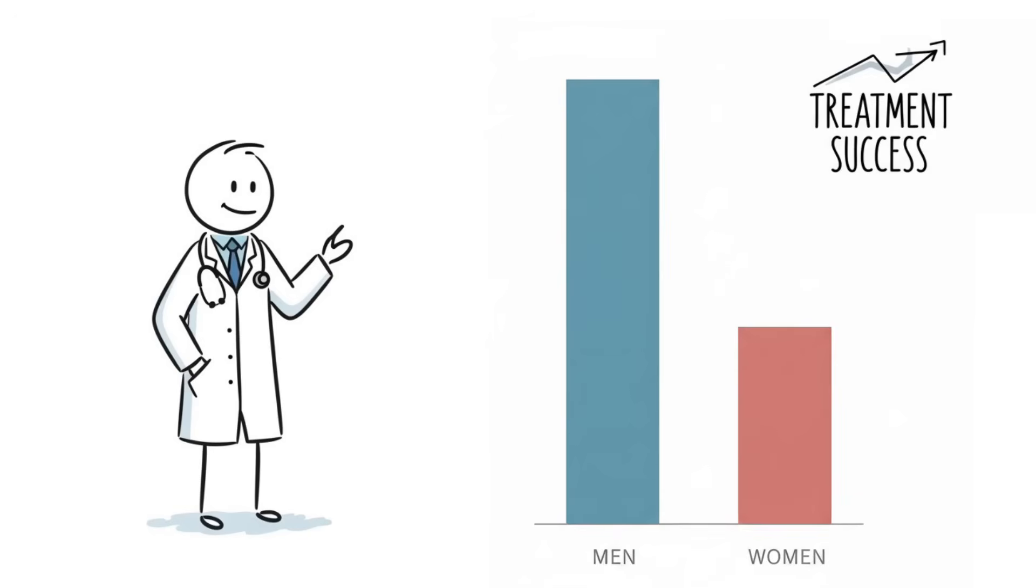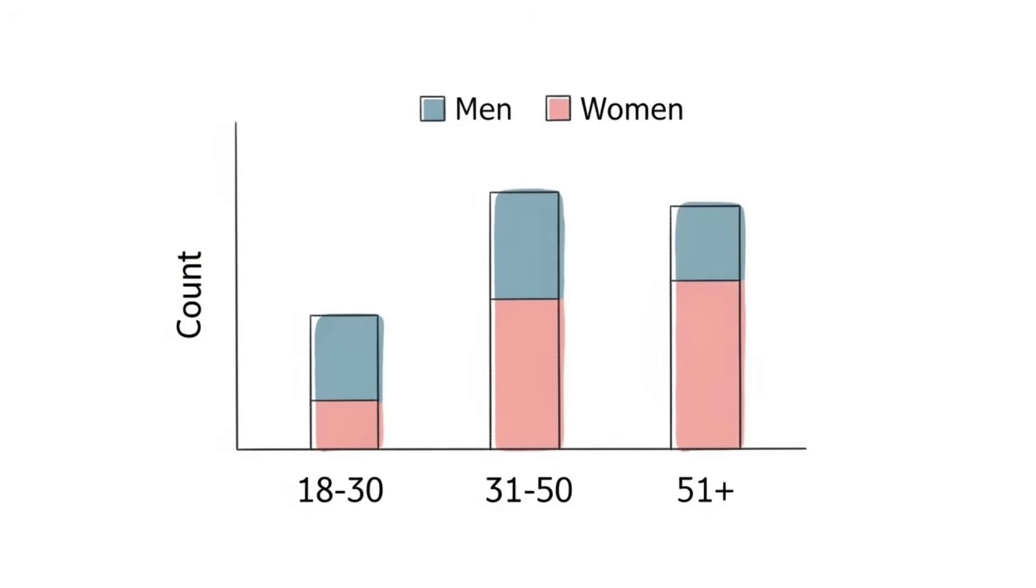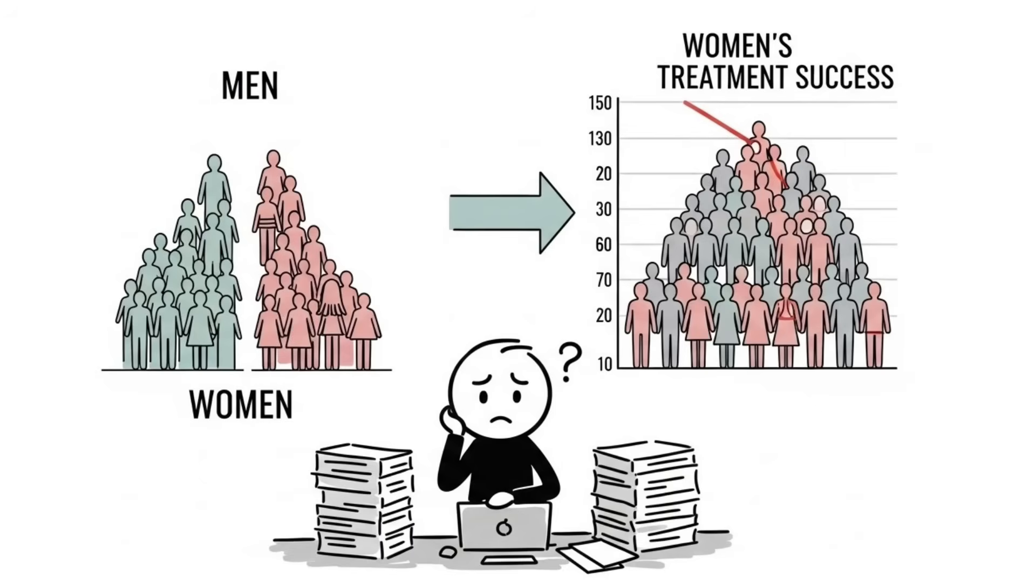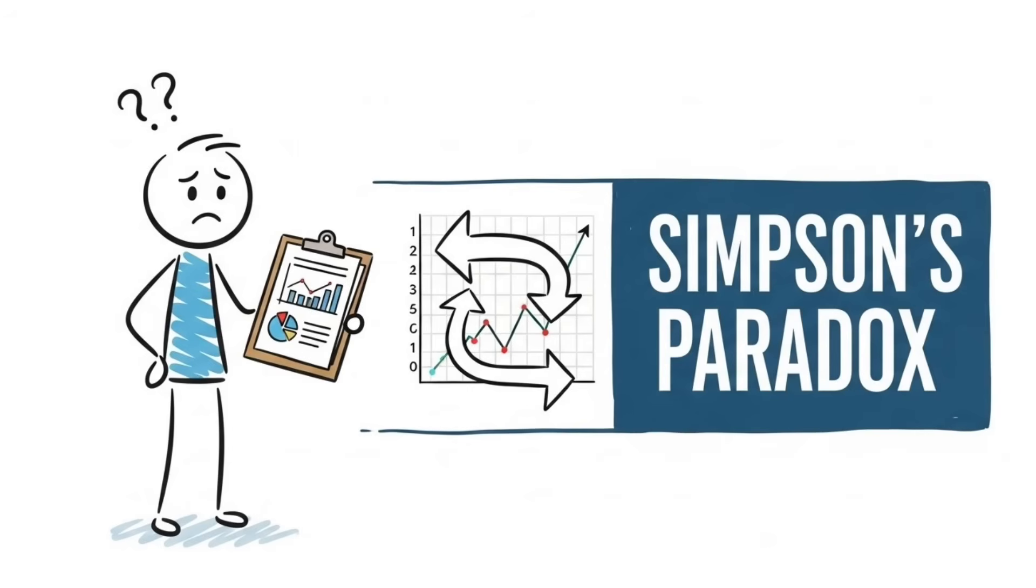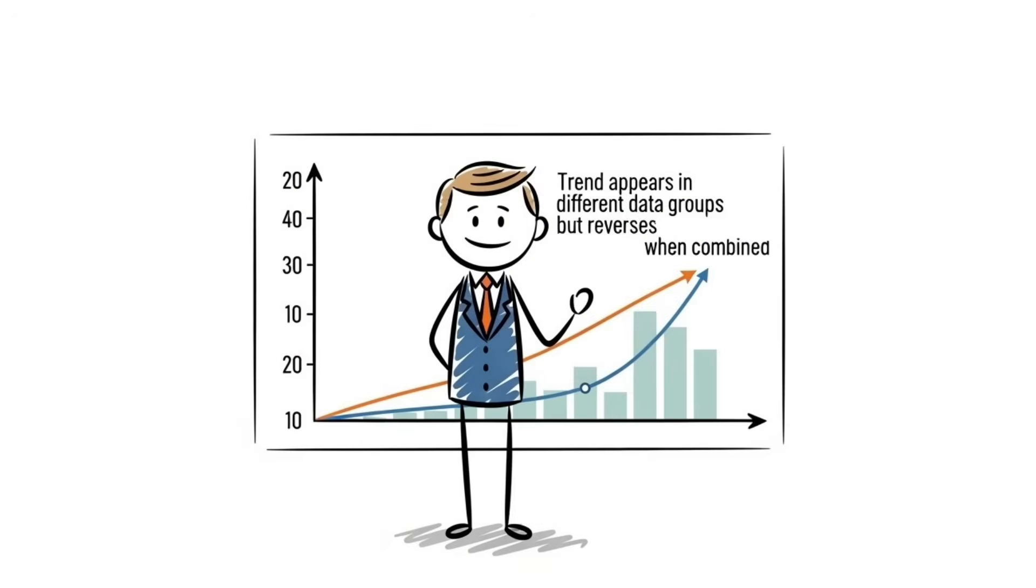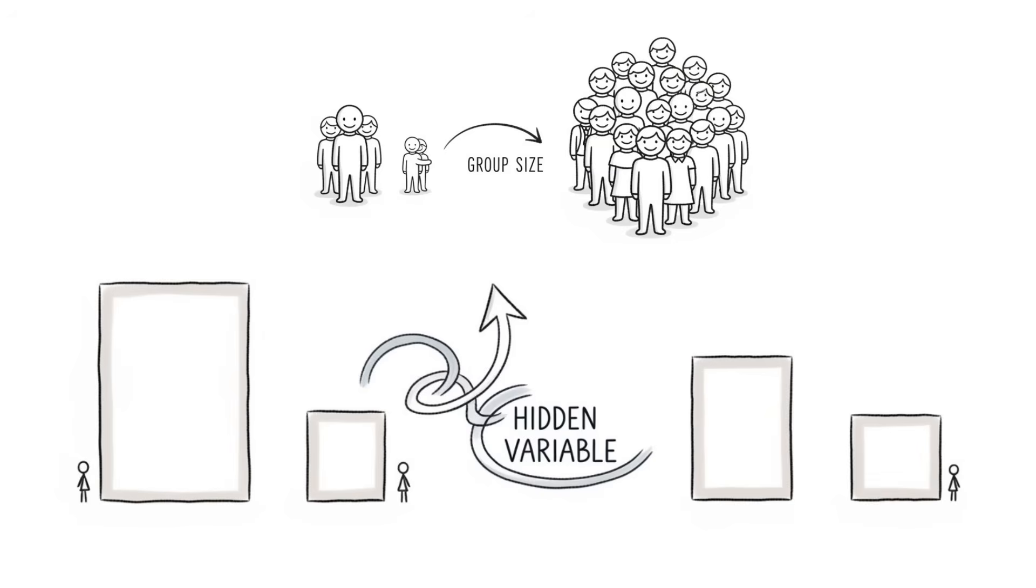Number one, Simpson's Paradox. A medical treatment works better for men than women in every age group. But when you combine all data, it looks like it works better for women overall. The trend completely reverses. This inversion is Simpson's Paradox, which was named after statistician Edward Simpson who described it in 1951. This phenomenon happens when a hidden variable like group size warps the combined result opposite to individual pieces.